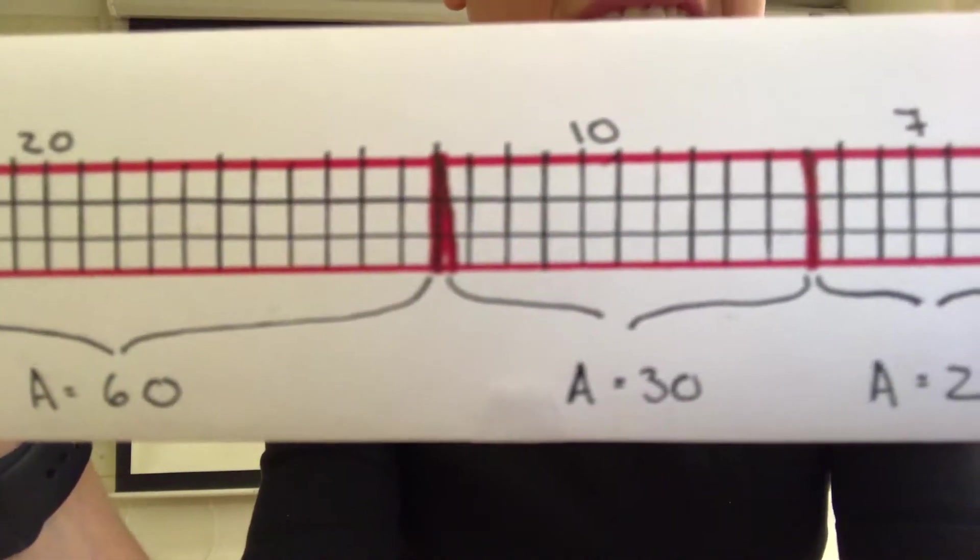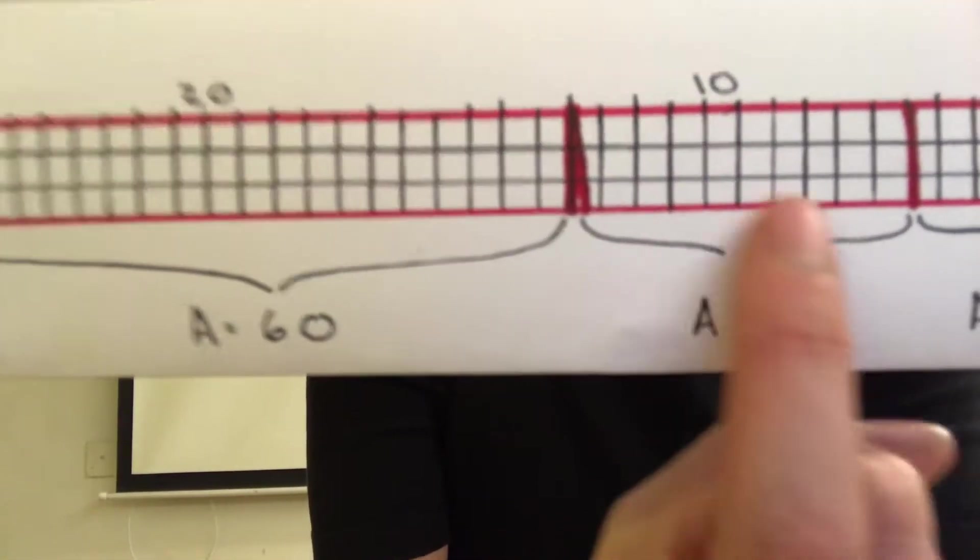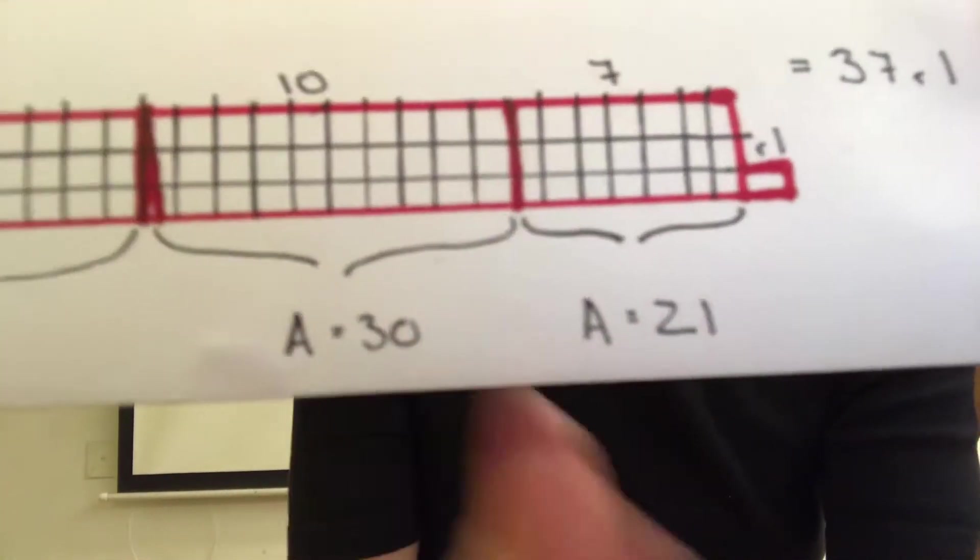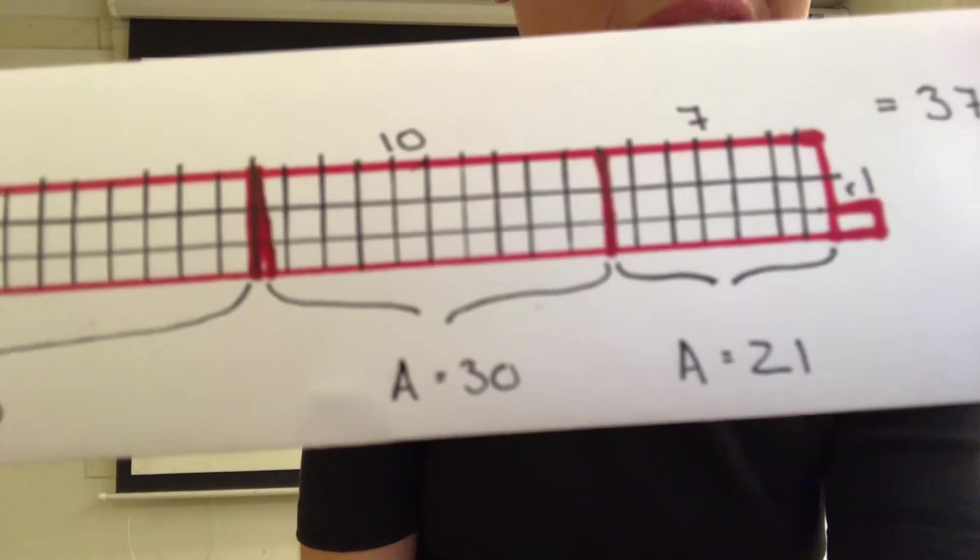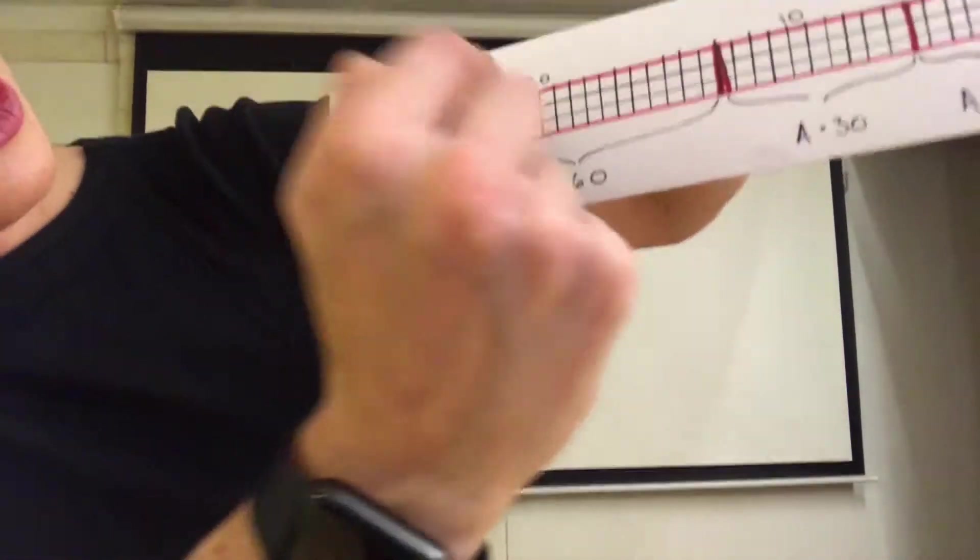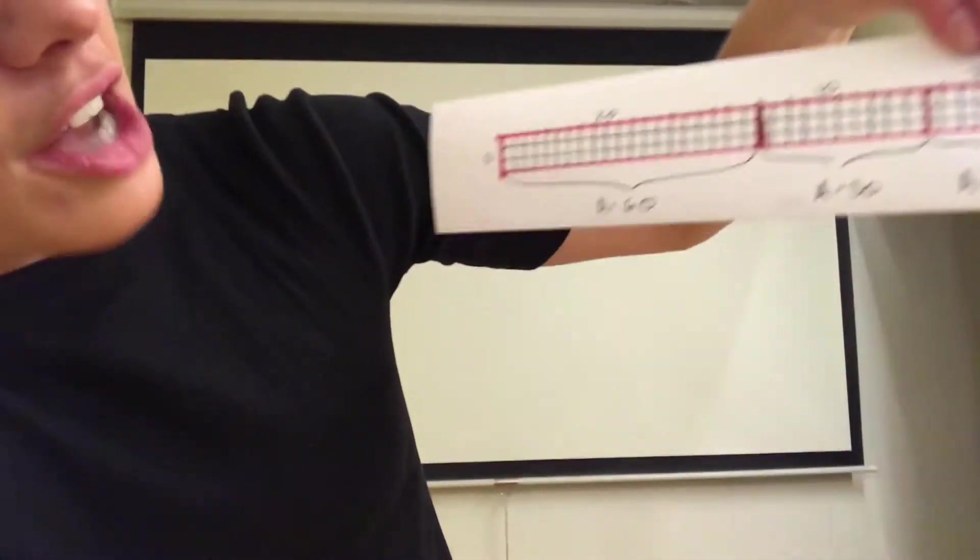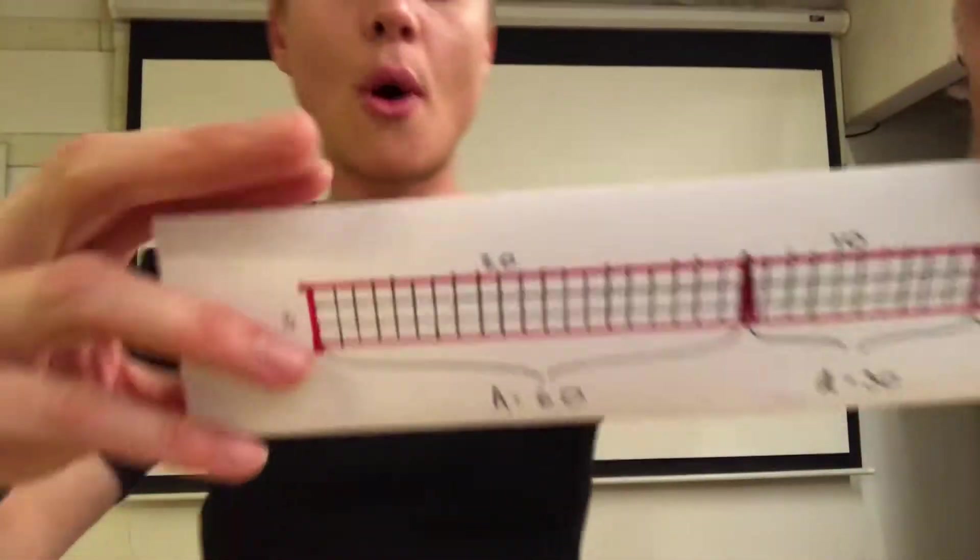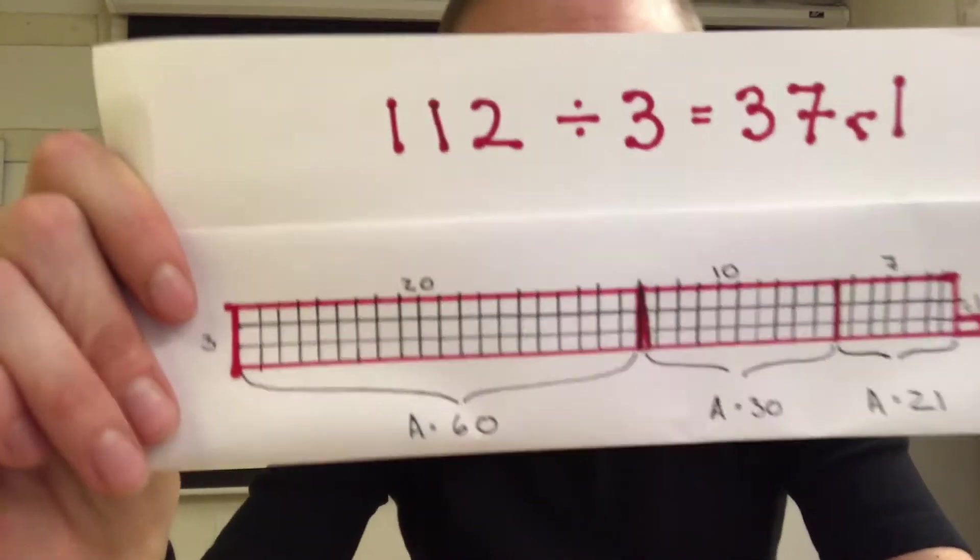My next section is 10 by 3, so that's a total area of 30. And my last section I have 3 ice cubes as my length and 7 ice cubes as my width to make 21 ice cubes total. So I know I add up 20 plus 10 plus 7 to find out how many ice cubes I have across, which will be my answer to 112 divided by 3.